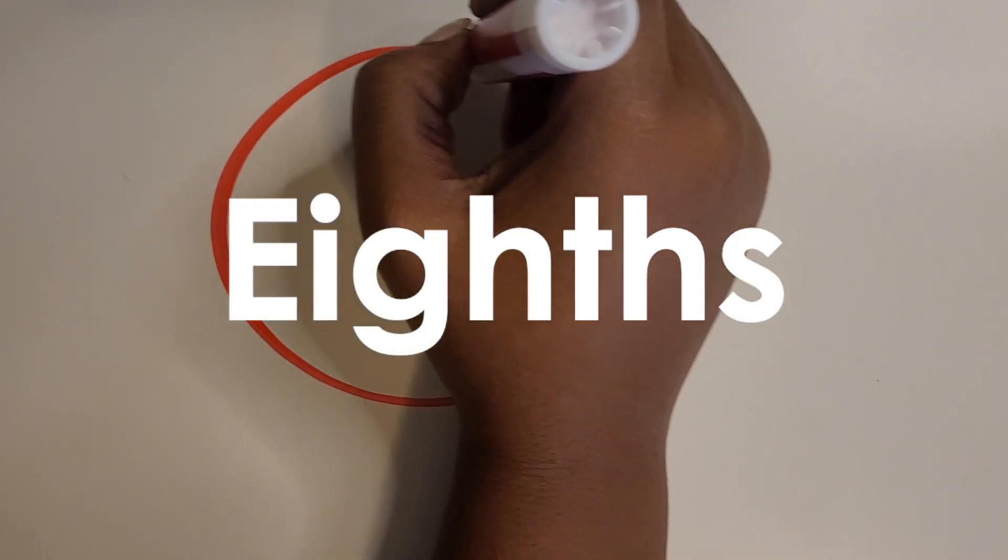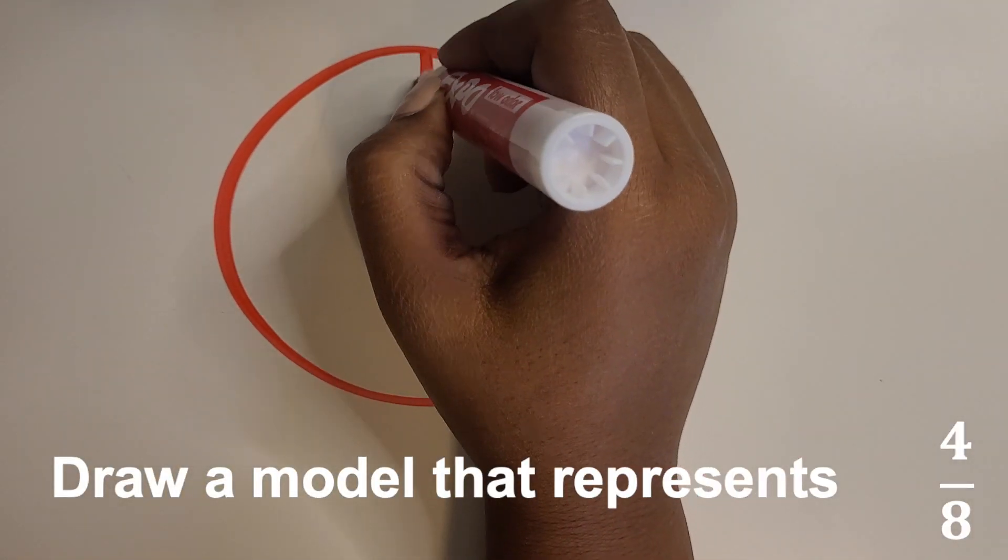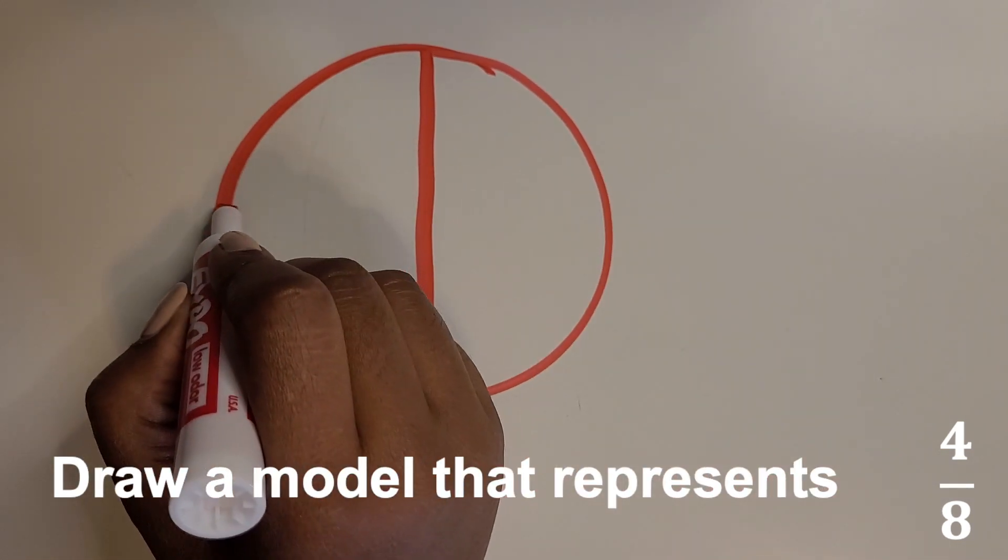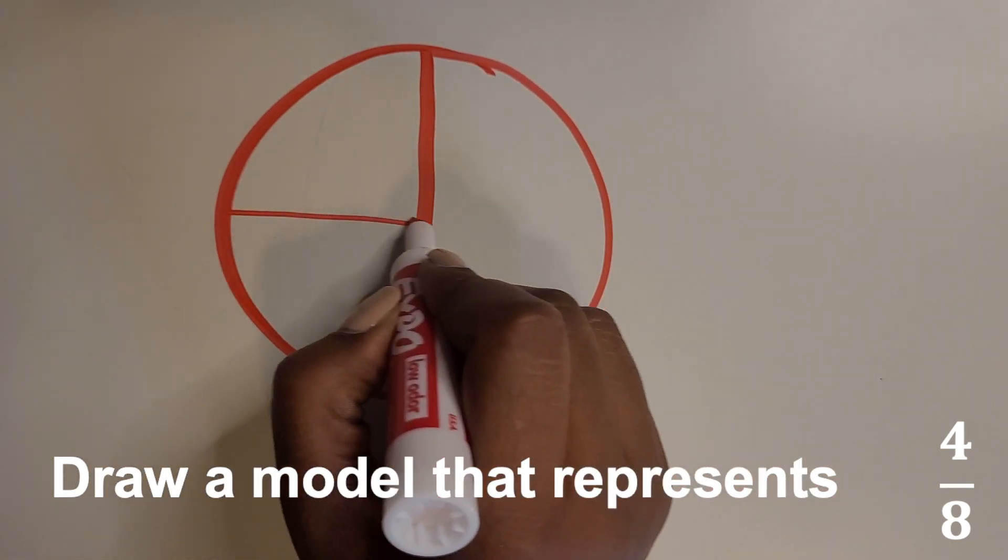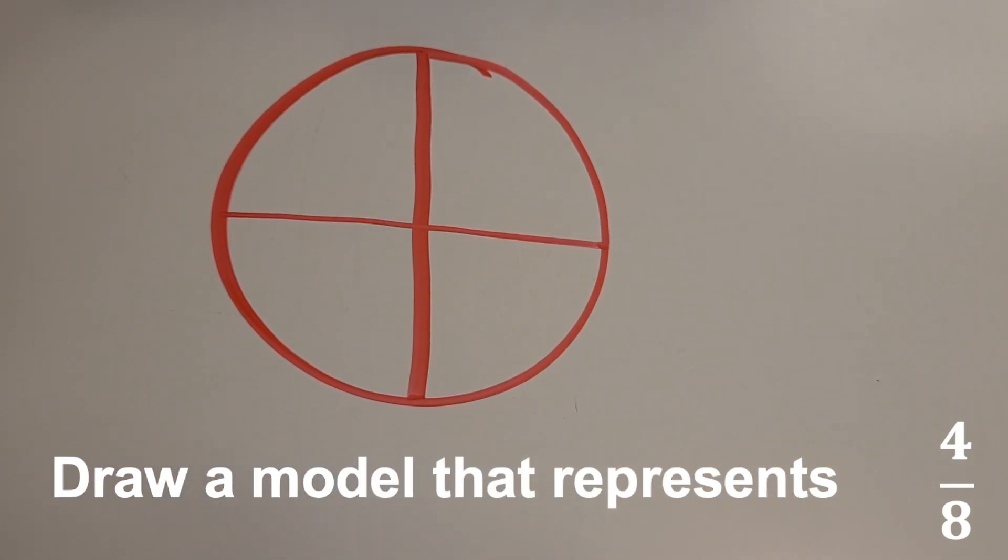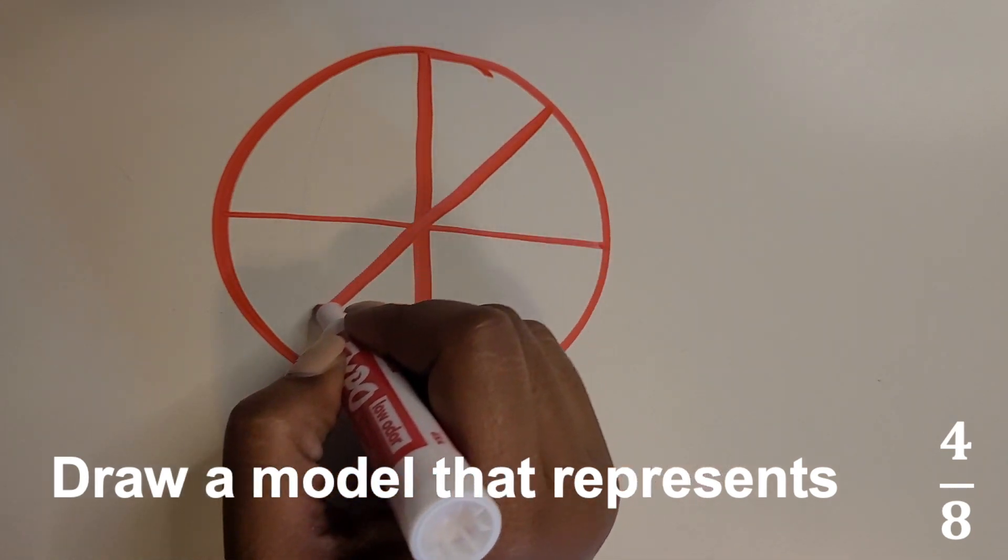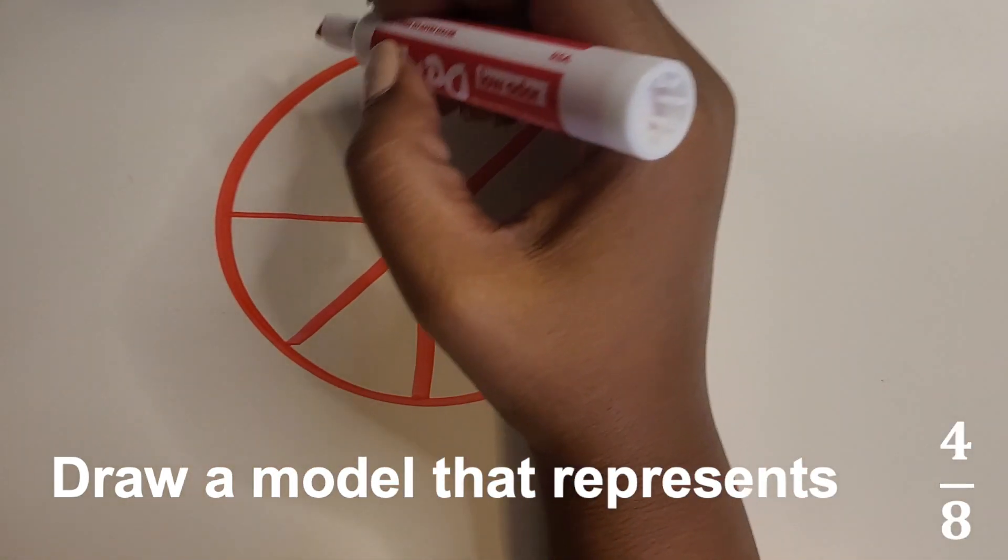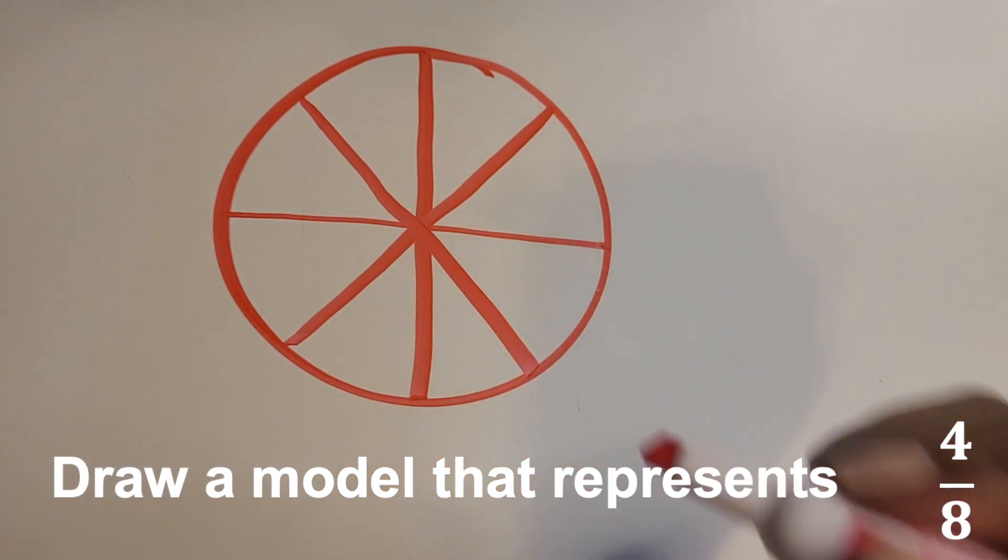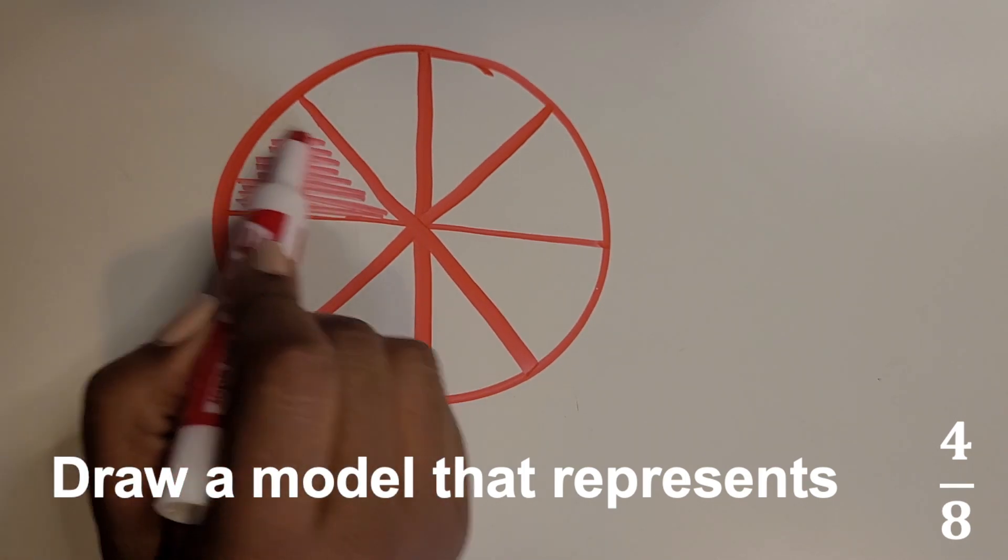Now we're going to create eighths. We're gonna start with our halves and then partition the half in halves to create fourths. Then we're going to partition each fourth in half diagonally by drawing like an X, a large X across the circle. And now we have eighths. Shade in any four of the eighths. They can be next to each other, but they don't have to be.